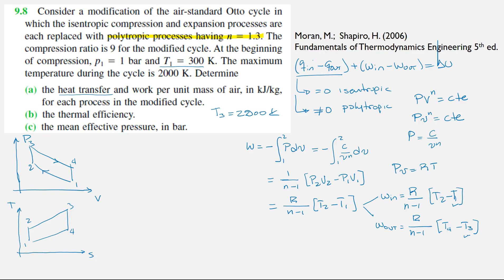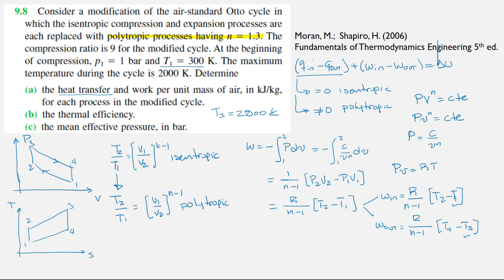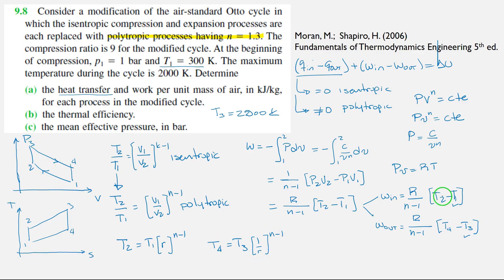Now we need to find T4 and T2. We cannot use the isentropic relation anymore — we have the polytropic relation. So we are going to modify it. Using this expression, we can recognize that T2 will be T1 times (v1 over v2) raised to (n minus 1), where v1 over v2 is the compression ratio r. Doing a similar analysis, since v3 over v4 is 1 over r, we can get T2 and T4 as well. With these two work values, we can get our net work.